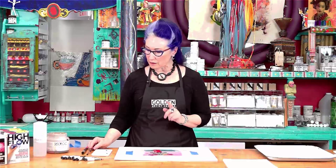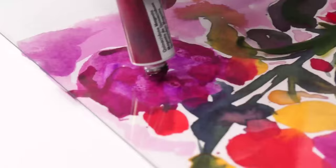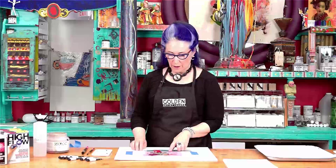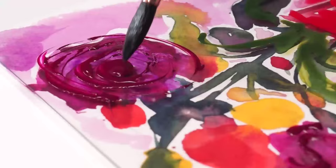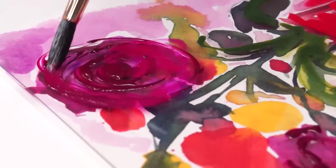I can paint this way but the other thing I can do which is really kind of fun is I can actually use the paint directly from the tube. Then after you've applied the paint directly from the tube you can go back with your brush and move it around on the surface.